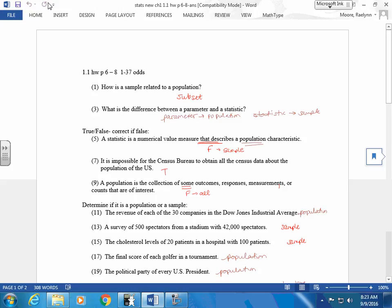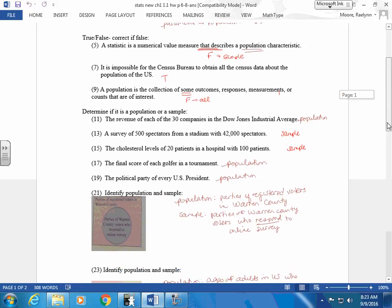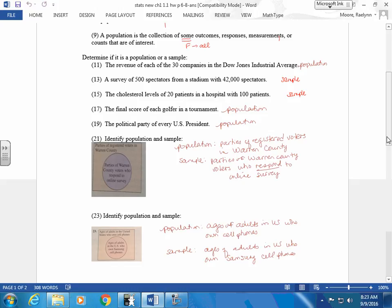A population is a collection of some outcomes, responses, measurements, all. Population is everybody. All encompassing. Describe whether these are populations or samples. The revenue of each of the 30 companies in the Dow Jones Industrial Average - population. A survey of 500 spectators from a stadium with 42,000 spectators - sample. The cholesterol levels of 20 patients in a hospital with 100 patients - sample. Final score of each golfer in the tournament - population. The political party of every U.S. president - population.